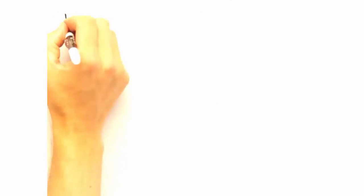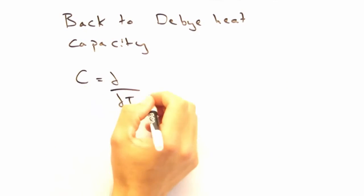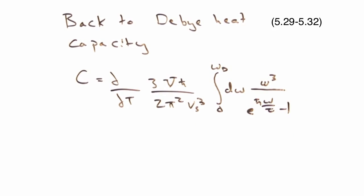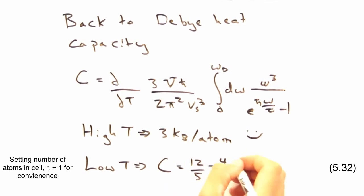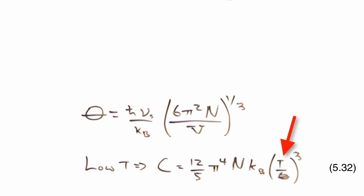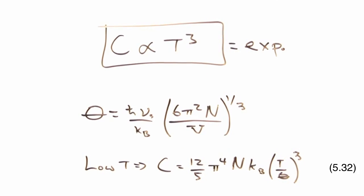Now we have all the components for our heat capacity integral. The exact math is laid out in Kittel, but the important parts are the high and low temperature limits. And at high temperature, we recover 3 kB per atom. That's pretty good stuff. The better news is the low temperature limit has a T cubed temperature dependence, which agrees very well with experiment.